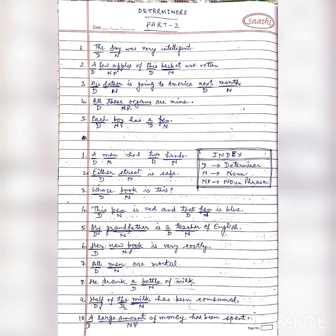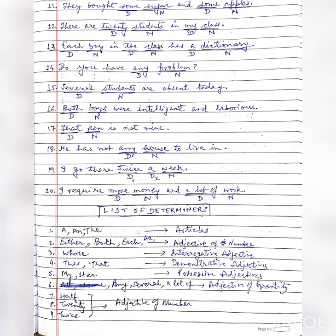In sentence nine, 'half of the milk has been consumed.' 'Milk' is the noun preceded by 'the,' which is a determiner, and also preceded by 'half,' which is also a determiner — so two determiners are used before 'milk.' In sentence ten: 'A large amount of money has been spent.' 'Large amount' is a noun phrase preceded by the article 'a,' and 'a large amount of' can be understood as a determiner used before the noun 'money.' Now let us look at sentences eleven to twenty.